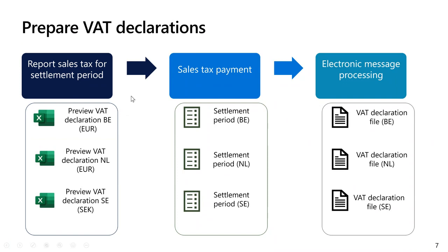For the reporting part in a legal entity with multiple VAT registrations, in the tax calculation parameters you need to activate VAT declaration, EU Sales List and Intrastat. If any of these parameters is not enabled, the user experience for reporting will not change for this legal entity. Now we will start with more details about how to execute and set up VAT declarations.